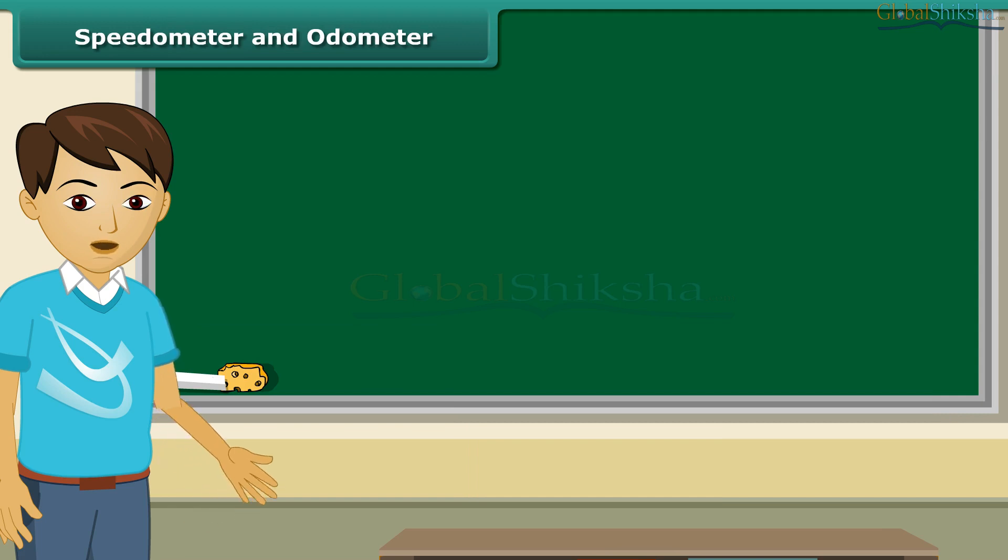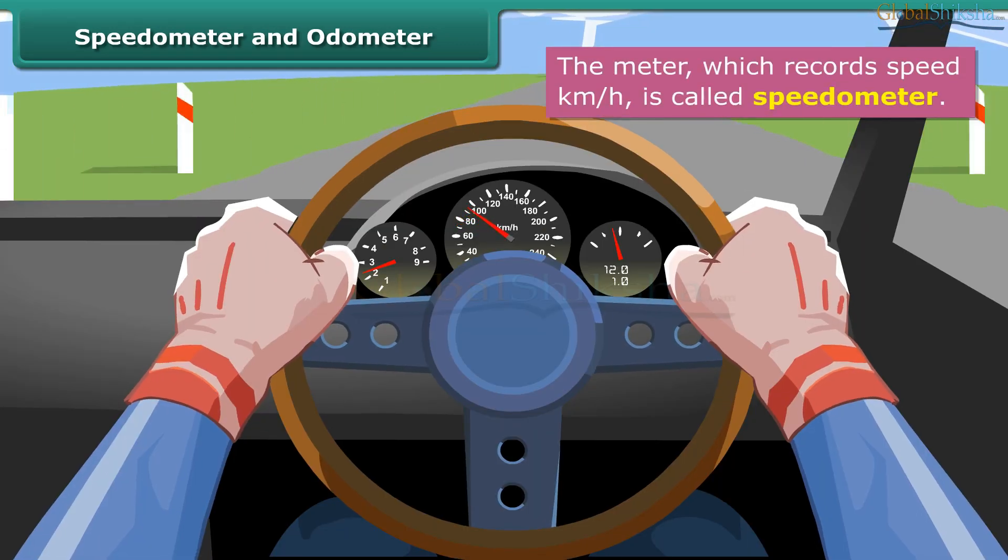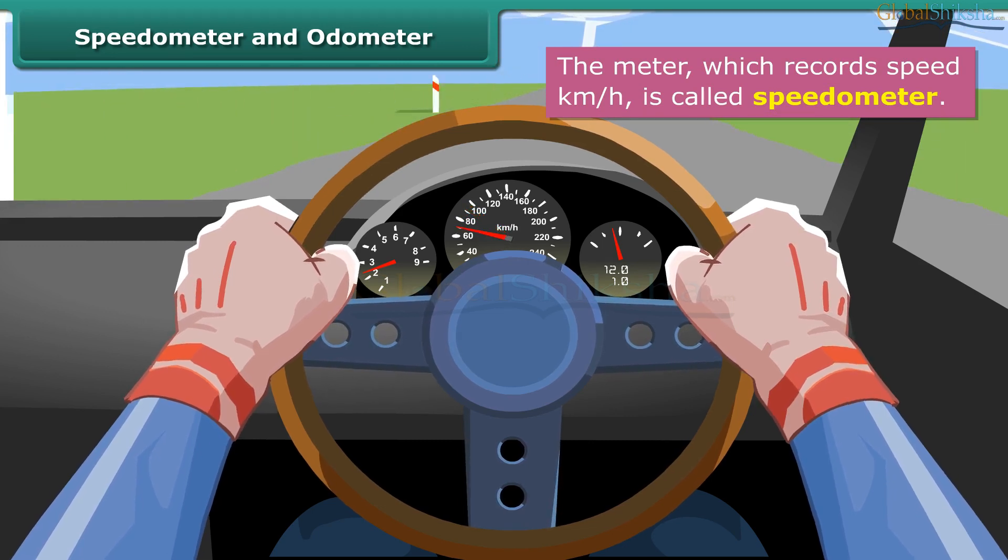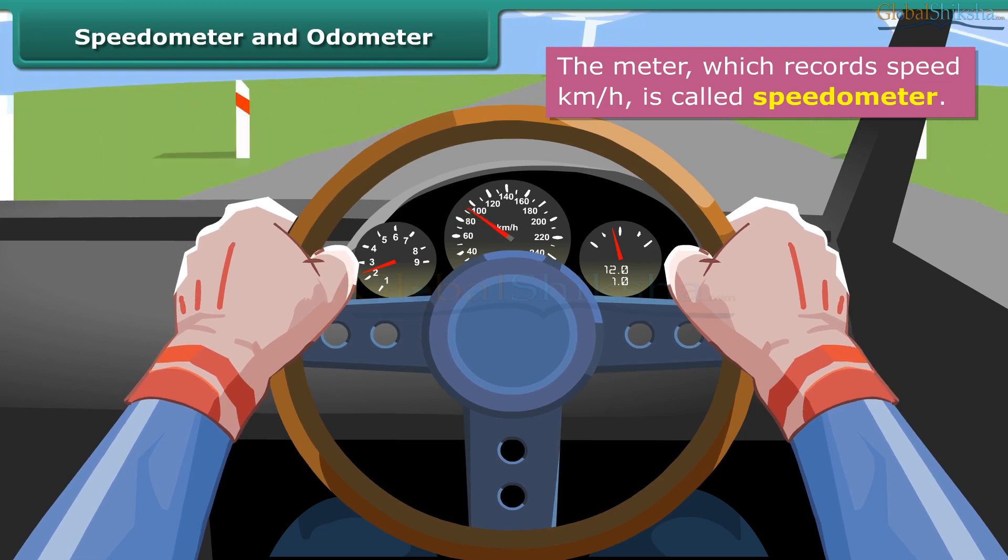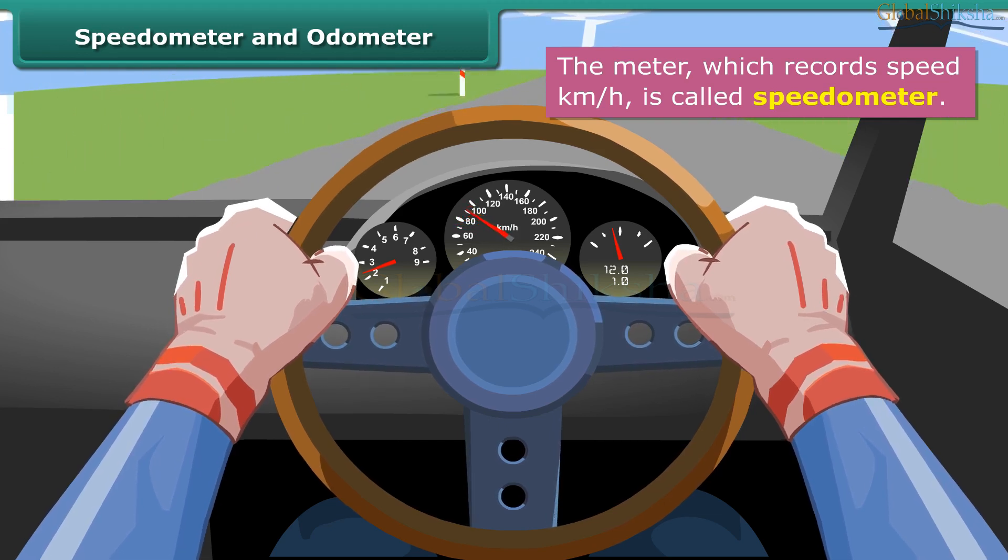Do the meters and indicators in front of the driver's seat of your father's car scare you? Now they won't. Straight beyond the steering wheel are 2 meters. The circular dial, which looks somewhat like a clock with needles and numbers, is the speedometer. When the car is in motion, one needle points to a particular number in the speedometer. This number is the speed of the car in km per hour.